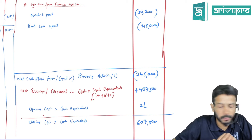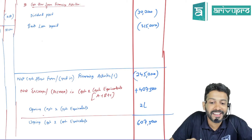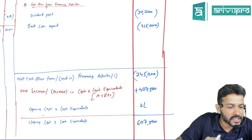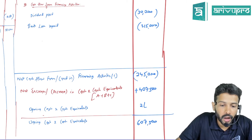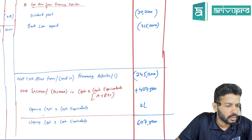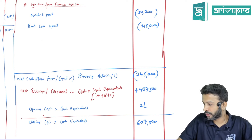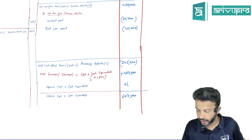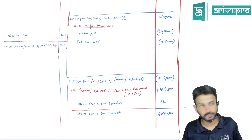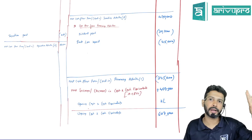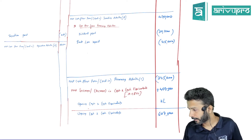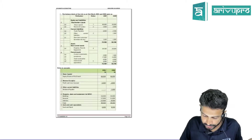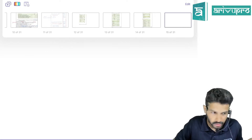Question 9 is homework. Question 10 is actually the indirect method. We'll start with Question 11. Those who are done can begin looking at Question 11.